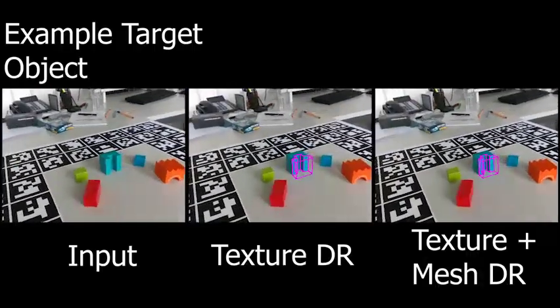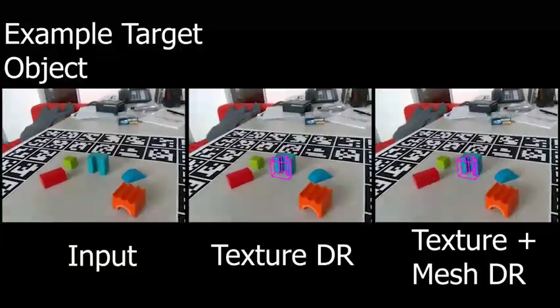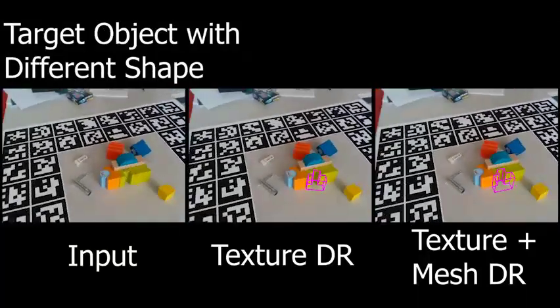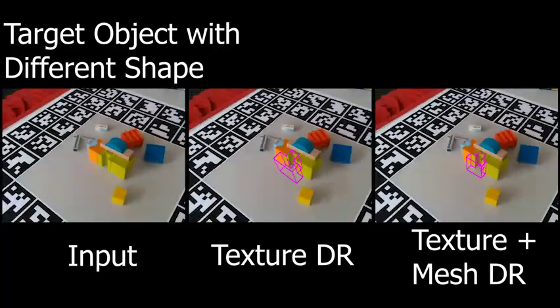Using only the texture randomization technique results in relatively good performance on the example object. However, when tested on objects with a different shape, the full domain randomization pipeline performs much better.